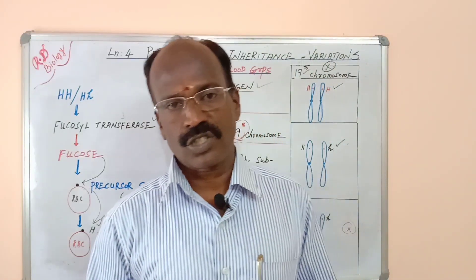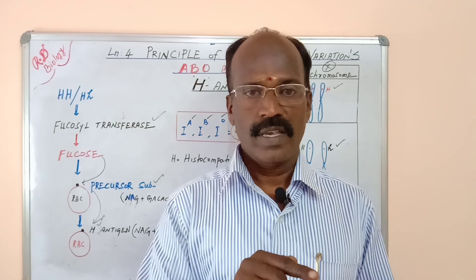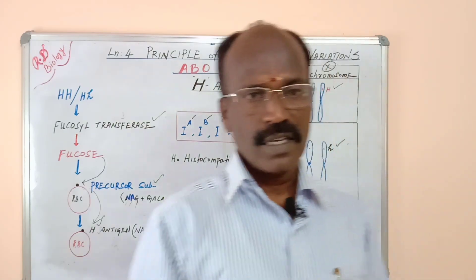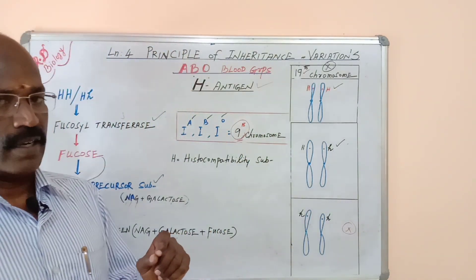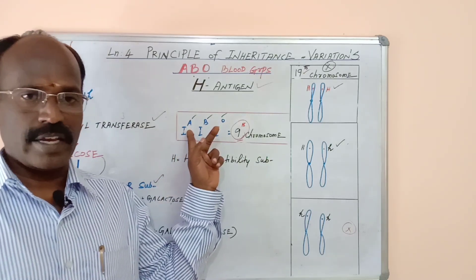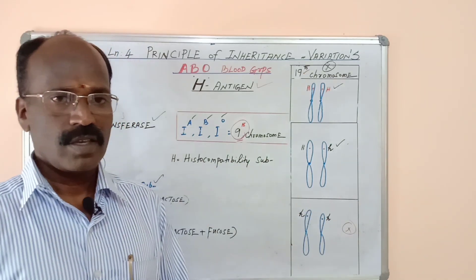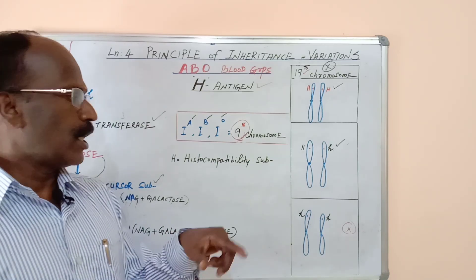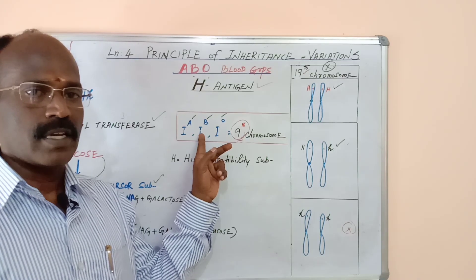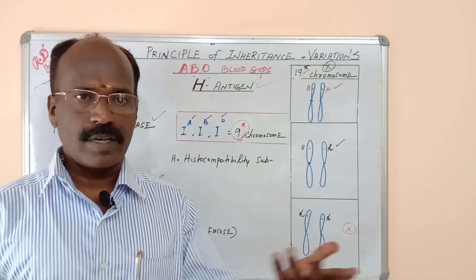This antigen H, in due course of time, based on the allele found in the 9th chromosome, may become antigen A or antigen B. If you have H antigen in the RBC membrane and your allele is A, the H antigen is transformed into antigen A and you become blood group A. If your allele is IB, the H antigen is transformed into antigen B and you become blood group B.